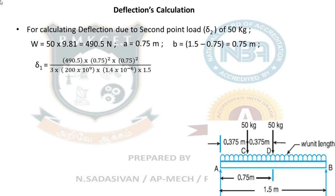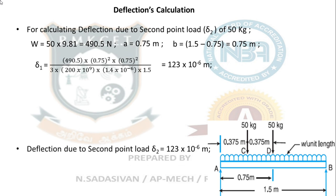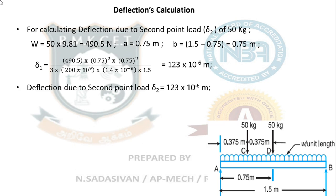Substituting: W = 490.5 N, A = 0.75, B = 0.75, denominator = 3 × 200×10⁹ × 1.4×10⁻⁶ × 1.5. Solving this gives δ₂ ≈ 123 × 10⁻⁶ m. Deflection due to the second point load is 123 micrometers.